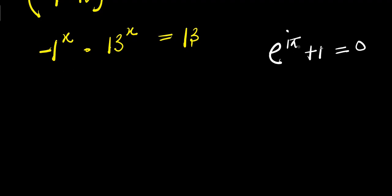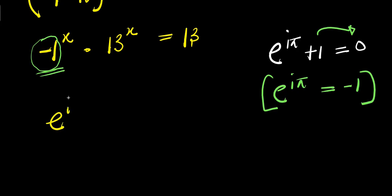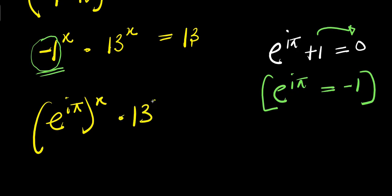So let's replace this negative 1 here. We can move this positive 1 over, giving us e to the power of i times pi equals negative 1. Now we are going to replace this negative 1 with e to the power of i times pi. So we have e to the power of i times pi, raised to the power of x, times 13 raised to the power of x, equals 13.